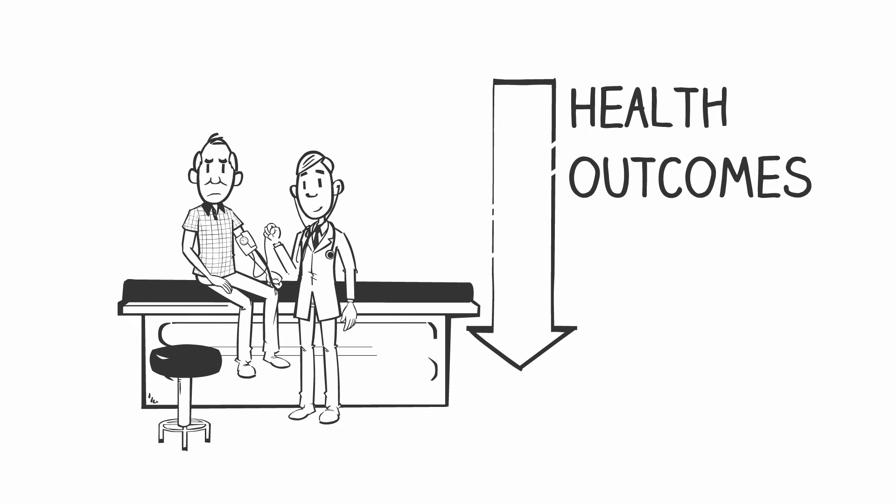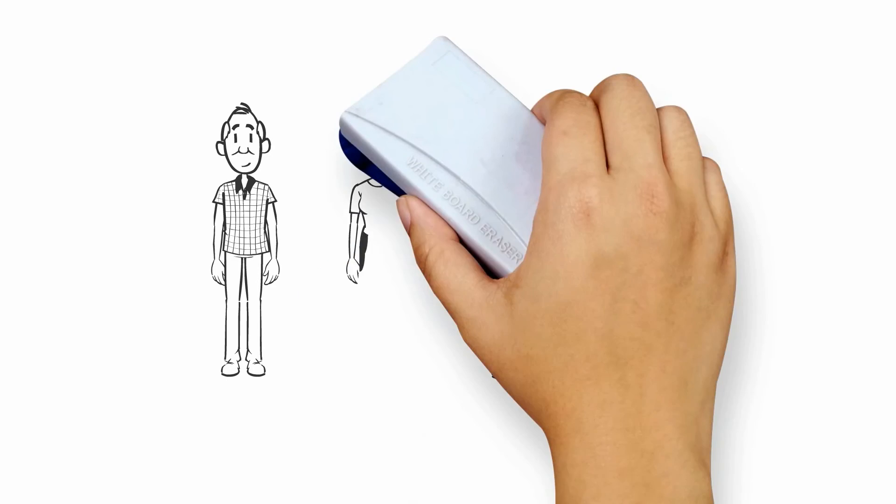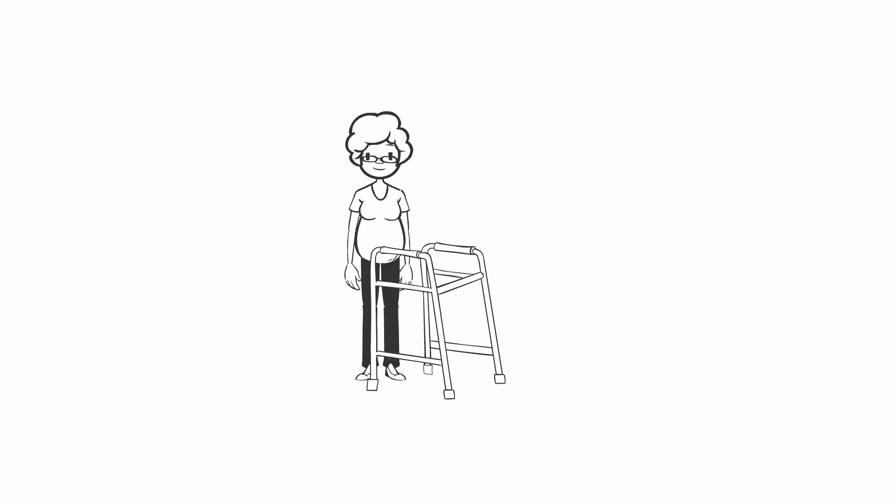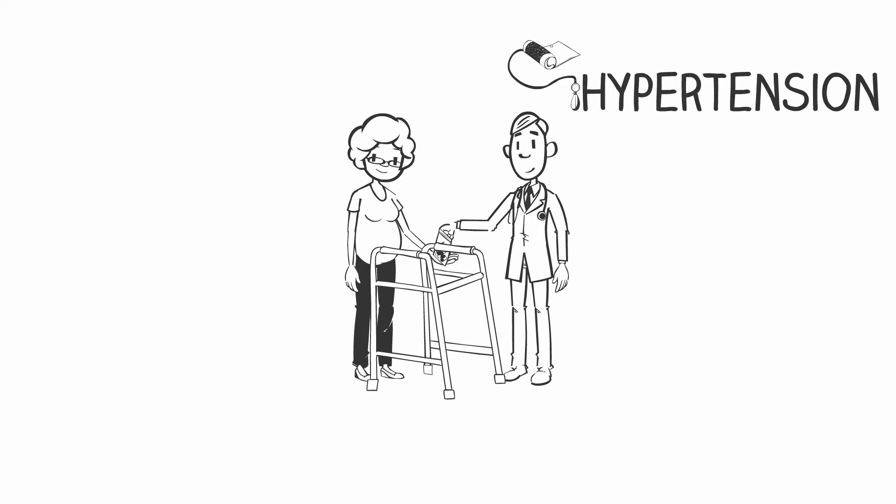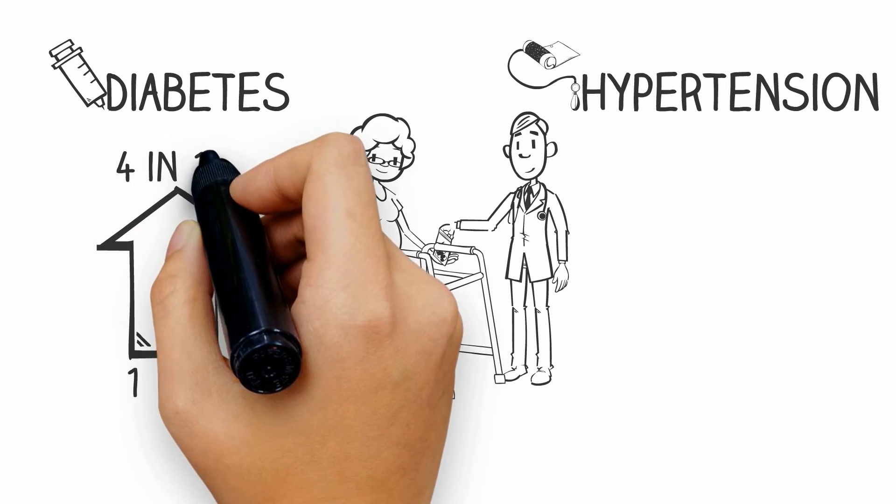many will have worse health outcomes. The share of obese Medicare patients will rise from 1 in 4 to 1 in 2. They will also be more likely to be disabled and have more chronic health conditions like hypertension and diabetes. In particular, the rate of diabetes will rise from 1 in 4 to nearly 4 in 10.